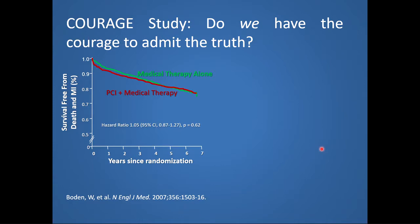Let's talk about the COURAGE study. This Kaplan-Meier curve is taken from the COURAGE study, which randomized 2,287 patients to PCI plus medical therapy versus medical therapy alone. These patients had stable angina with evidence of myocardial ischemia on stress testing or resting ECG before coronary angiography. On the y-axis is survival free from death and MI expressed as a percentage; on the x-axis, years since randomization. What we find is that there is no difference between the two arms of the study at a median follow-up of 4.6 years. The hazard ratio is 1.05 with a p-value of 0.6, and the confidence interval crosses 1.